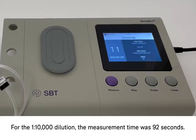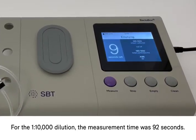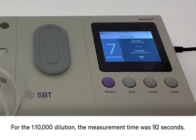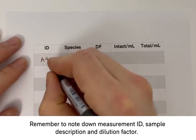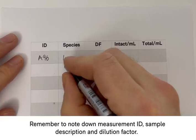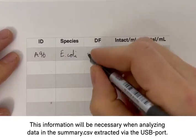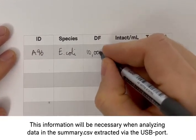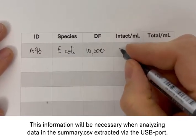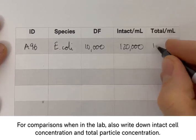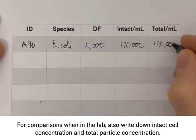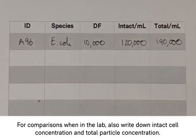For the 1 to 10,000 dilution, the measurement time was 92 seconds. Remember to note down at least the measurement ID, dilution factor and sample description. You'll need this information later when analyzing data in the summary.csv file extracted via the USB port. If you want to do comparisons when in the lab, it's also quite convenient to note down the intact cell concentration and total particle concentration.